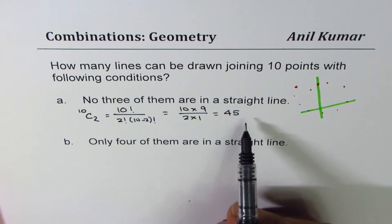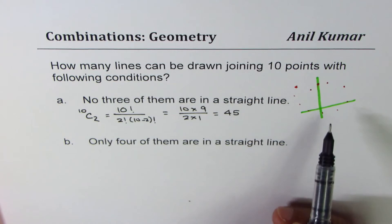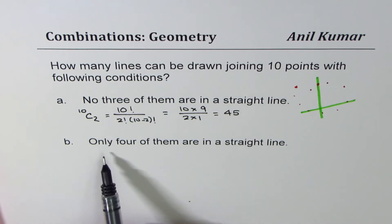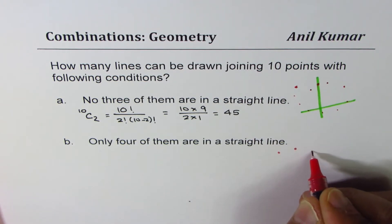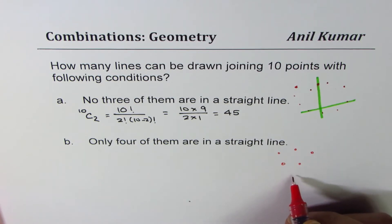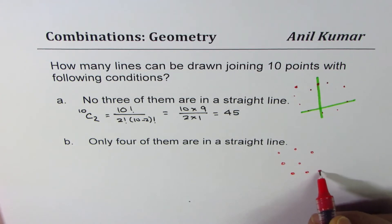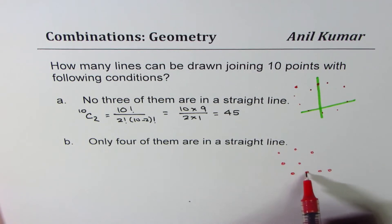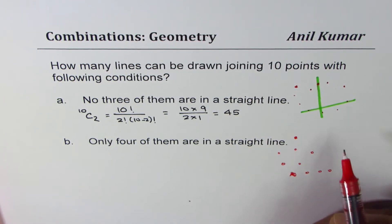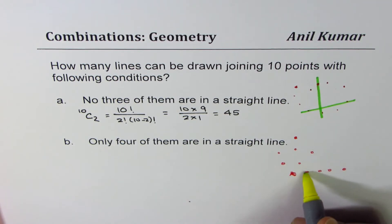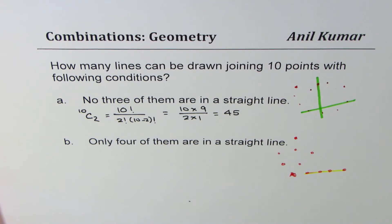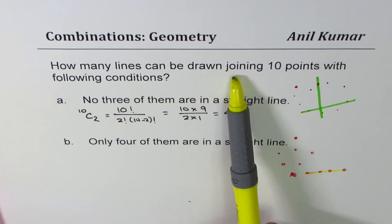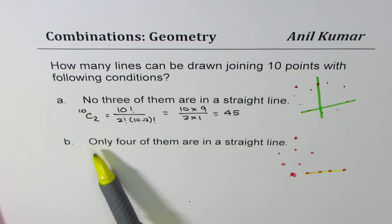So there are 45 lines — the maximum that can be formed using 10 points where no three are collinear. Now for Part B, we add a twist: only four of them are in a straight line. So we have 10 points where six are scattered, but four of them lie on a straight line. The question is: how many lines can be drawn joining 10 points when only four of them are in a straight line?